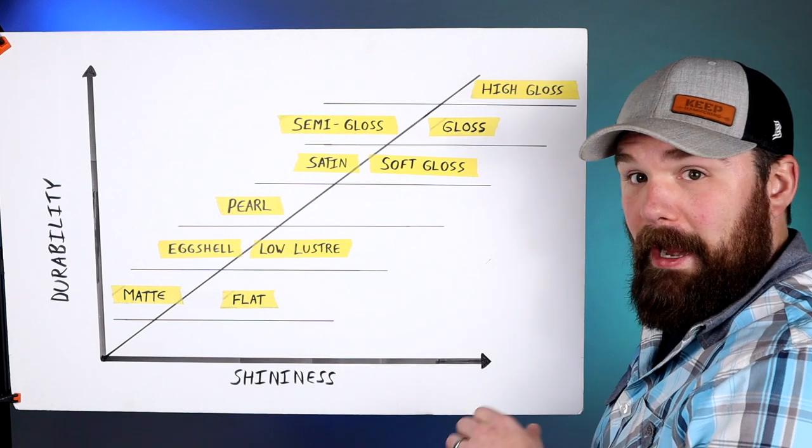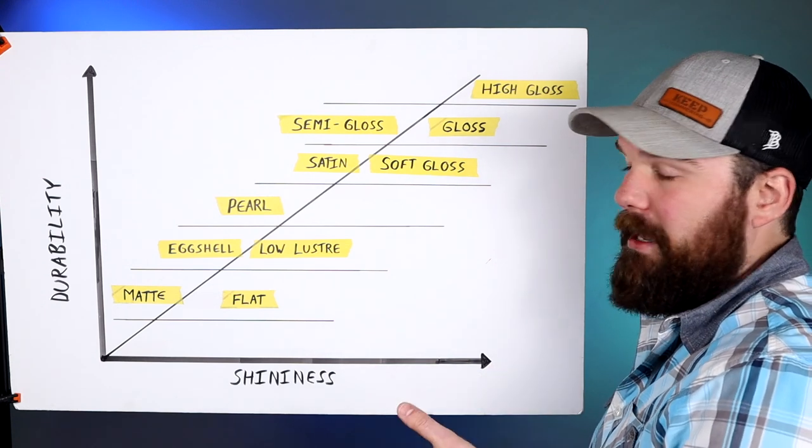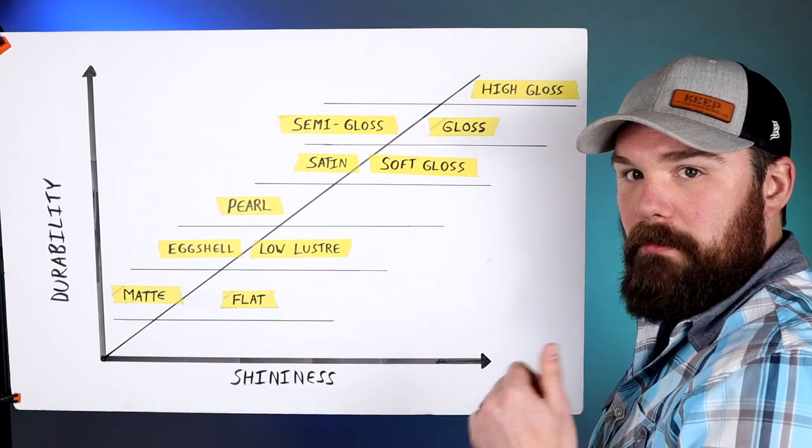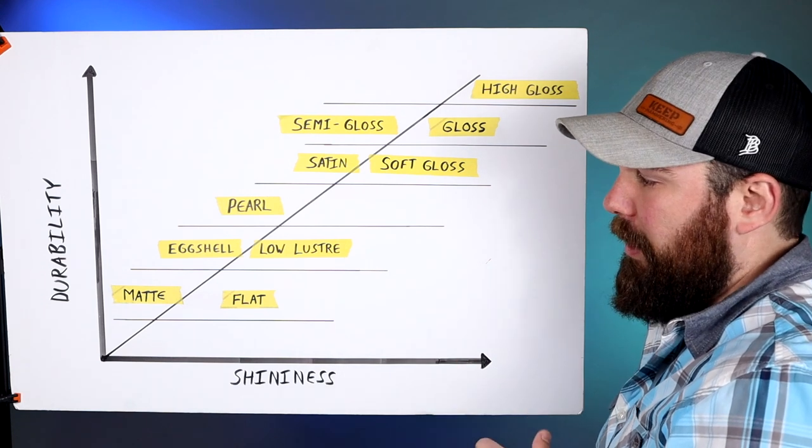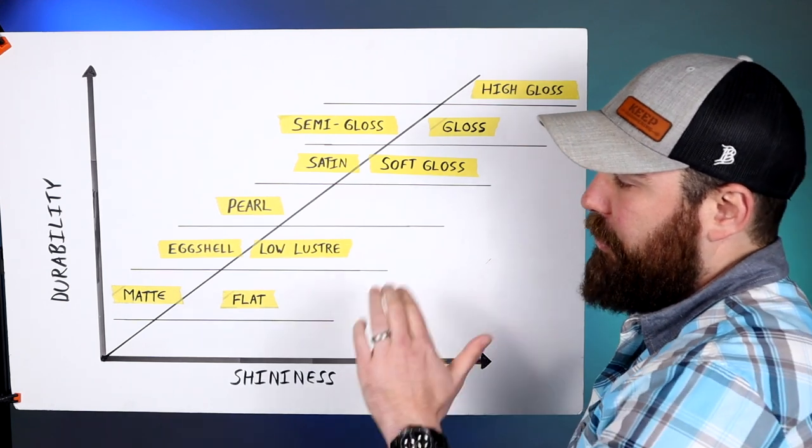Because flat tends to not hold up well in the long run. When it rains, the flat paint stays wet longer than something that's got a higher sheen to it. So you're gonna run into mold and mildew issues more quickly than you would if you used a higher sheen product.